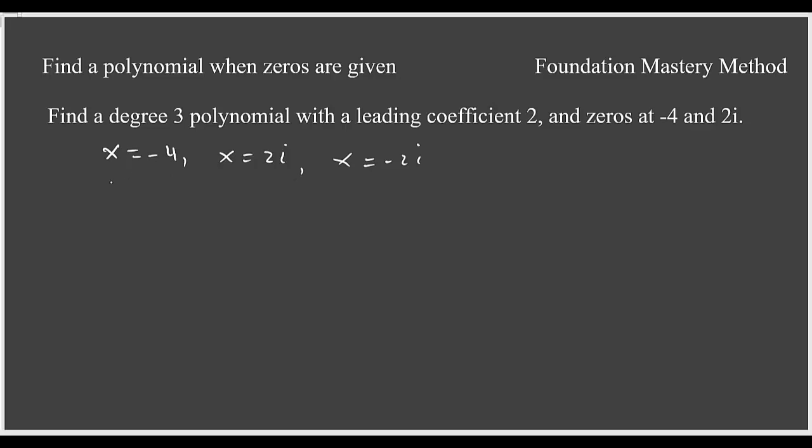So from these we get factors like this: x plus 4 is a factor, x minus 2i is a factor, x plus 2i are factors.